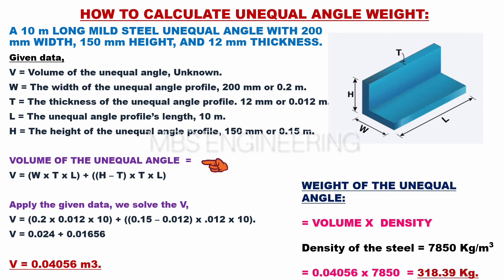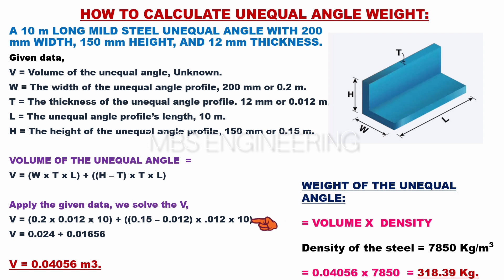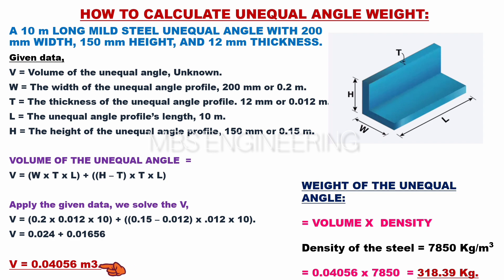Next, we learn how to calculate the volume of the unequal angle. V equals W×T×L plus (H minus T)×T×L. Applying the given data: V equals 0.2×0.012×10, plus (0.15 minus 0.012)×0.012×10. V equals 0.024 plus 0.01656. V equals 0.04056 cubic meters. The volume of the unequal angle is 0.04056 cubic meters.